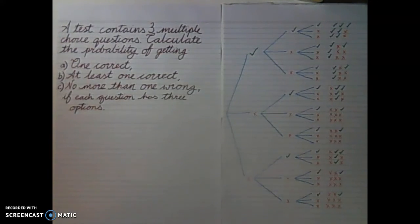Hey guys, today we're going to do a question involving probability with multiple outcomes. We have a test containing three multiple-choice questions, and we need to calculate the probability of getting one correct, at least one correct, and no more than one wrong if each question has three options.